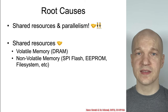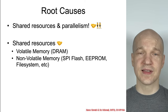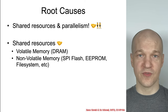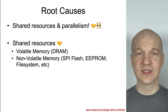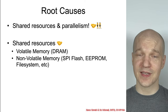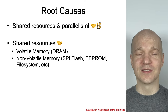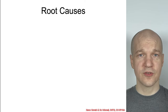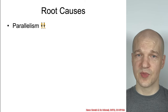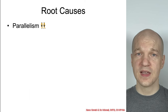By shared resources, I mean things like RAM, volatile memory, and non-volatile memory — things like SPI flash, EEPROM, hard drive file systems, and so on. That covers all the types of memory, volatile and non-volatile. When you have a shared resource and there is parallelism in play, you have the opportunity for race conditions.